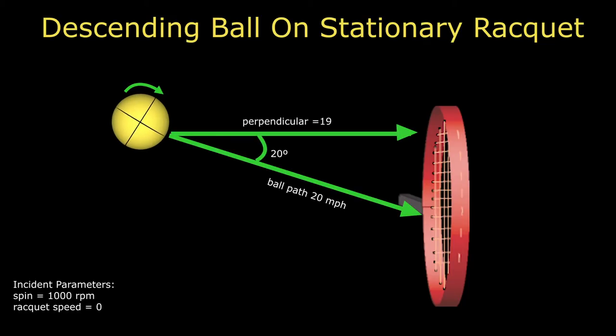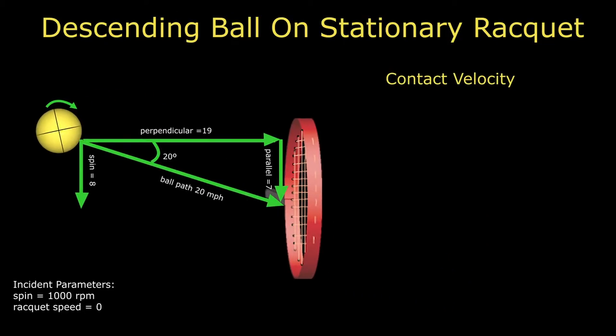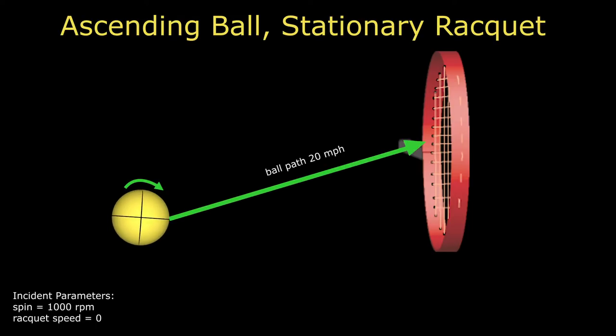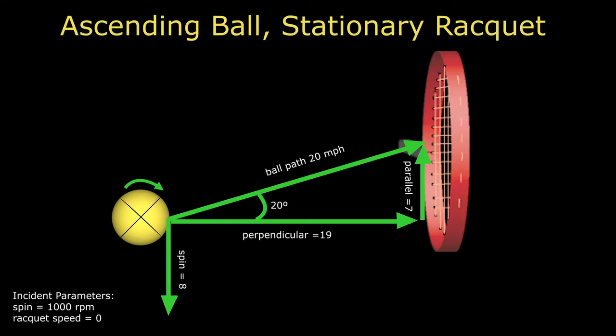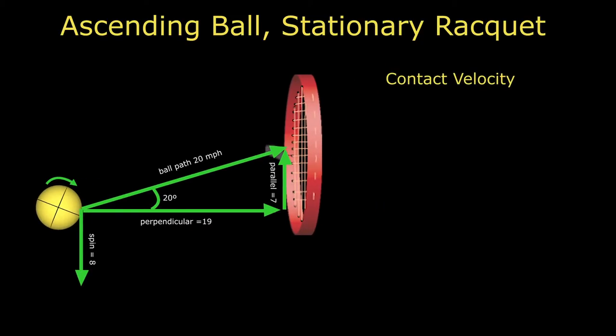If the relative path is descending left to right and the ball is spinning clockwise, then both the spin and linear contact speeds will be in the same direction on the strings. Consequently, the contact velocity will be downward and relatively substantial. If the relative path is ascending, then the spin and linear contact speeds will be in opposite directions. As a result, depending on which of the two contact speeds is greater, the net contact velocity may be directed downward, upward, or even perpendicular to the string bed.